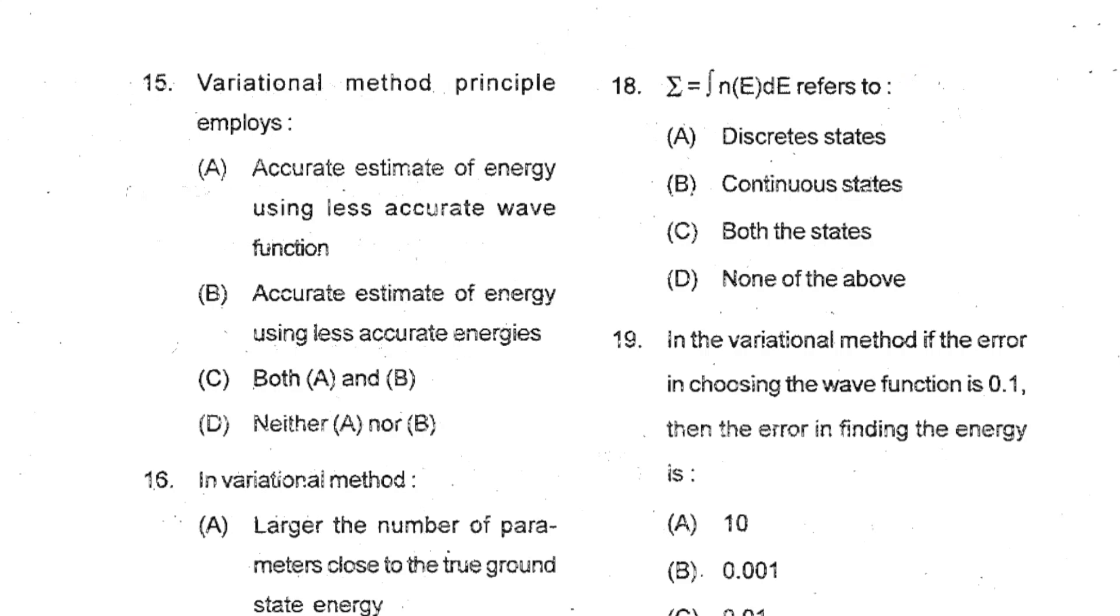Question number 15: Variational method principle employs accurate estimate of energy using less accurate wave function. So A is your correct option.